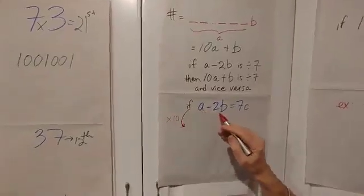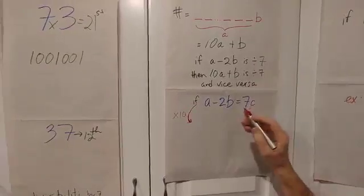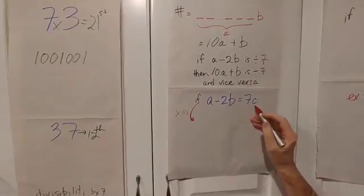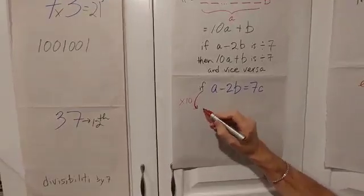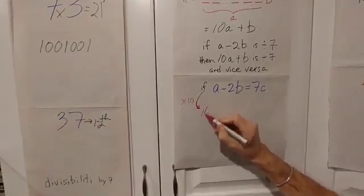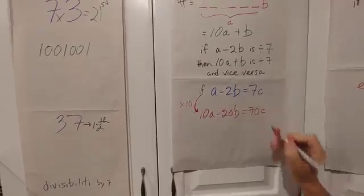So let's start off with A minus 2B. If that's divisible by seven, then it must be seven times something. Let's call that something C. Now at this point, I have to employ a little bit of a trick. I'm going to multiply by 10. So I'm going to get 10A minus 20B equals 70C.